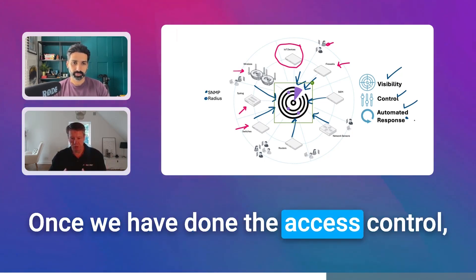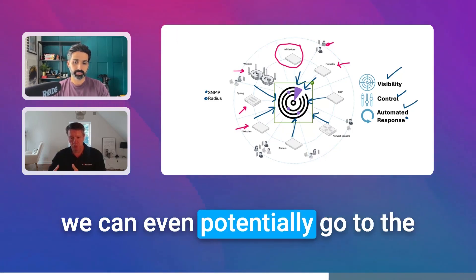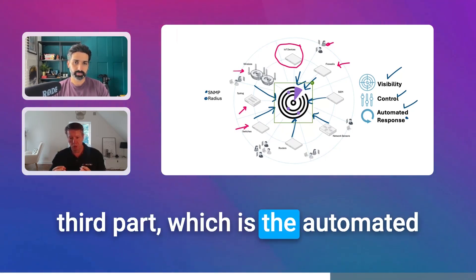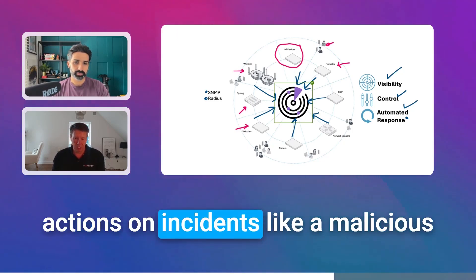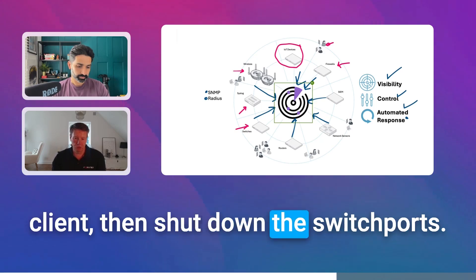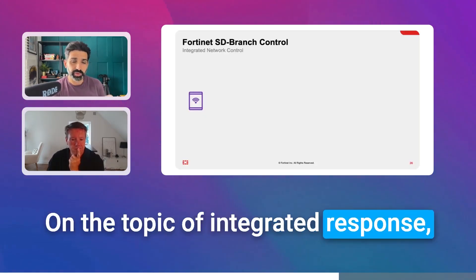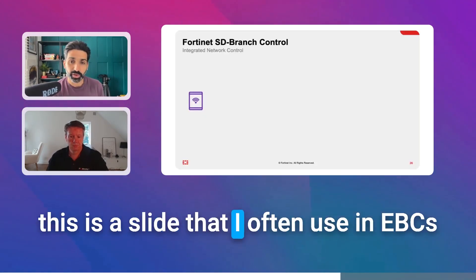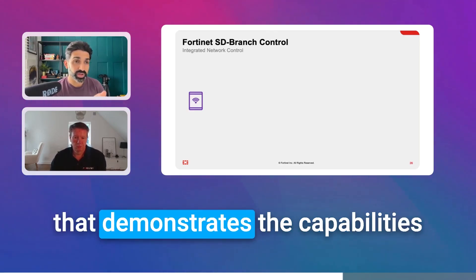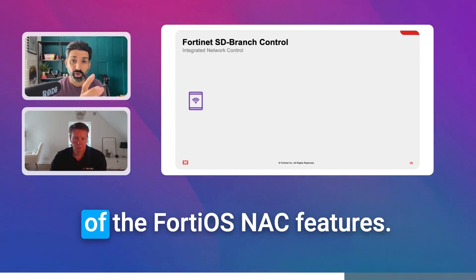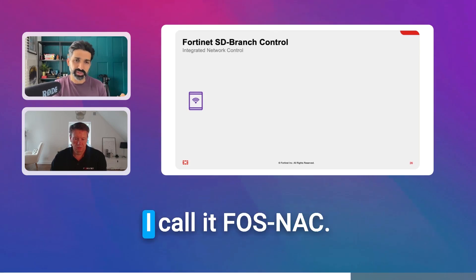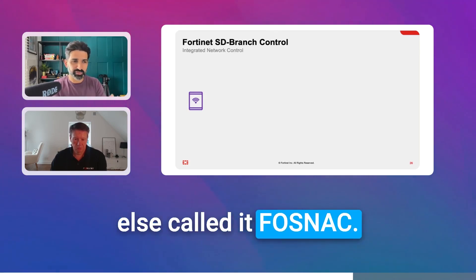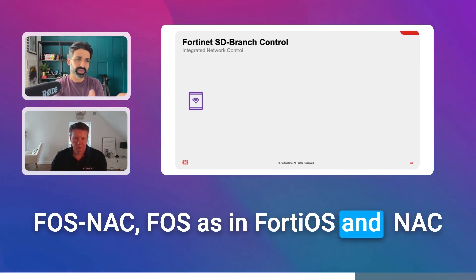Once we have done the access control, we can potentially go to the third part, which is the automated response — where we can take actions on incidents like a malicious client and then shut down the switch. On the topic of integrated response, this is a slide I often use in EBCs that demonstrates the capabilities of the FortiOS NAC features — the free NAC features built into FortiOS. I call it FOSNAC — FOS as in FortiOS, and NAC as in NAC.